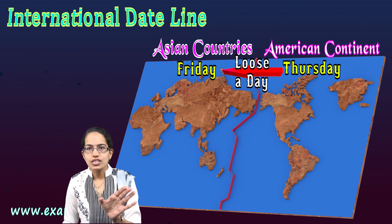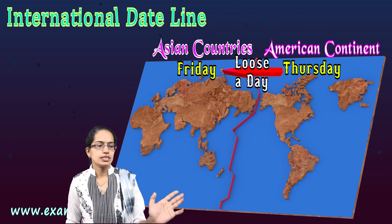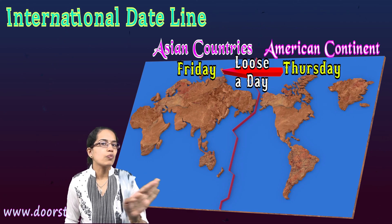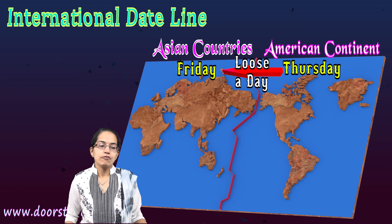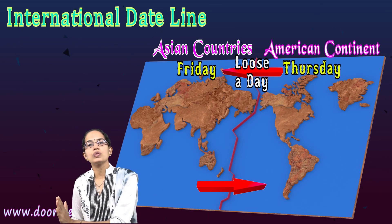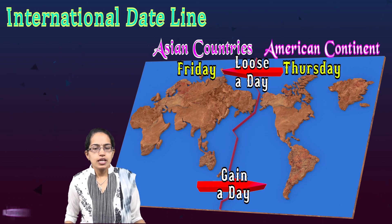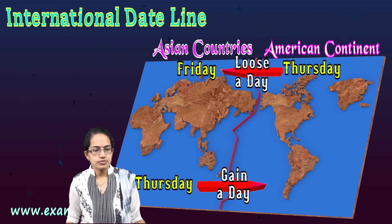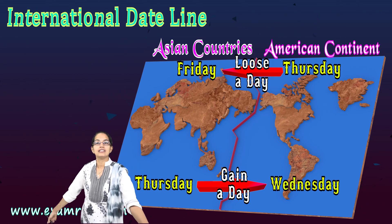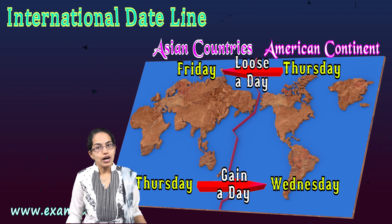If you are moving from the American continent to the Indian continent and crossing the IDL westward, you gain a day. So if it is Thursday when you leave, upon reaching the American continent it would be Wednesday — you are yet to witness another Thursday. Crossing eastward you lose a day; crossing westward you gain a day. This is one of the major concepts to understand about the International Date Line.